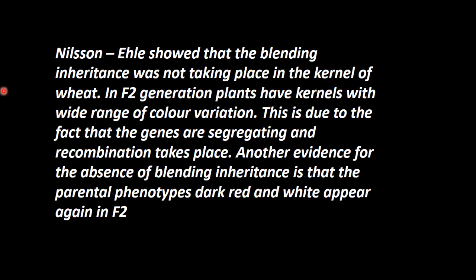What is the inference? Nizan and Eli showed that blending of inheritance was not taking place. The alleles are not blending together in the kernel of the wheat, though three genes are involved in the kernel color expression. In the F2 generation, plants have kernels with a wide range of color variation, due to the fact that the genes are segregating and recombination takes place. Another evidence for the absence of blending is that parental phenotypes — dark red and white — also appear again in F2, showing it is segregating and recombining.